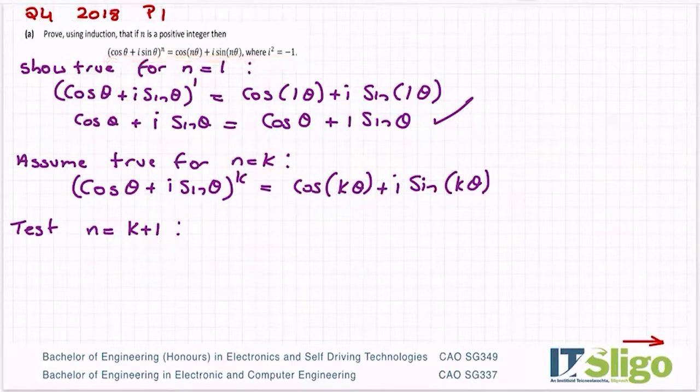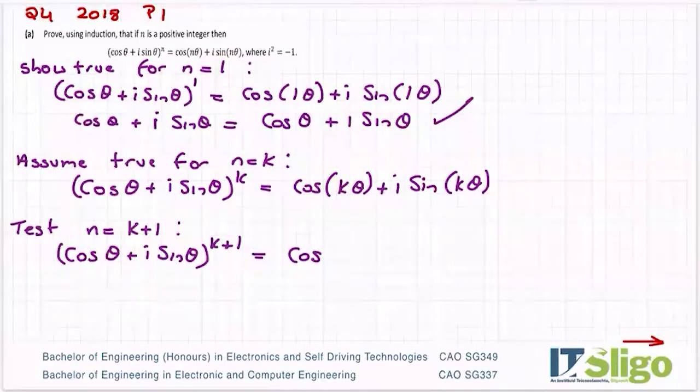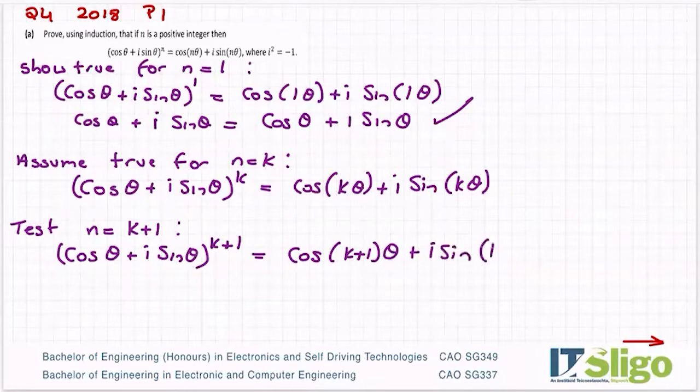So back I go here and I replace n with k plus 1. So I have cos theta plus i sine theta to the power of k plus 1. And I'd like to show that that is equal to cos of k plus 1 times theta plus i sine k plus 1 times theta. That's what I'm going to show that it's equal to.